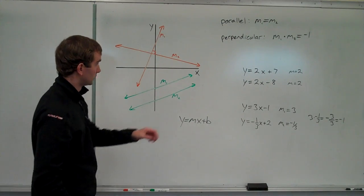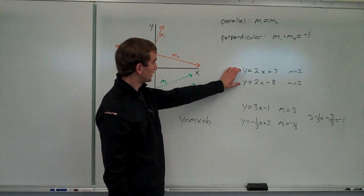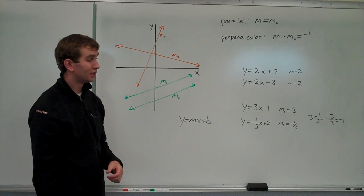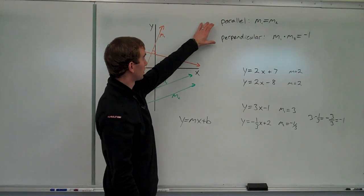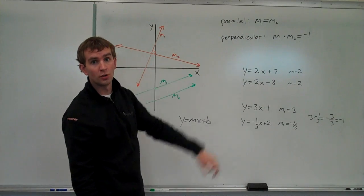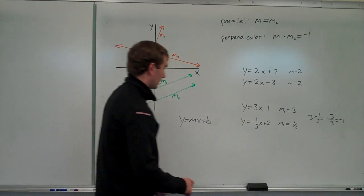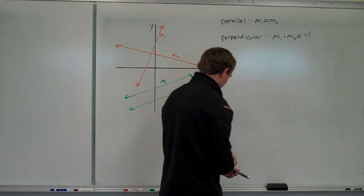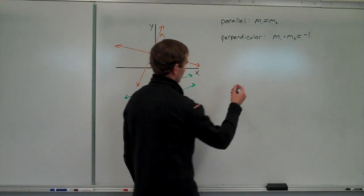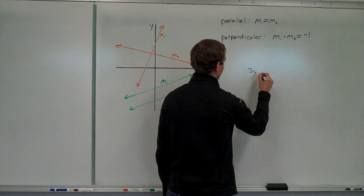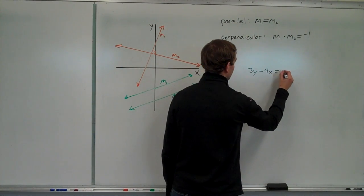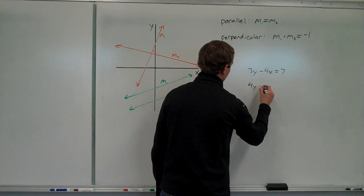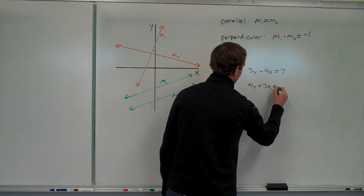That's one way you might see this: you get two equations of lines, you decide whether the slopes are equal to each other, whether they multiply together to be negative 1, or neither — and that's how you tell if they're parallel, perpendicular, or none of the above. A little offshoot of that is if I give you equations like 3y minus 4x equals 7 and 4y plus 3x equals 14, and ask whether those two lines are parallel, perpendicular, or neither.